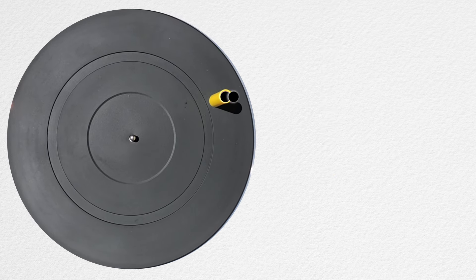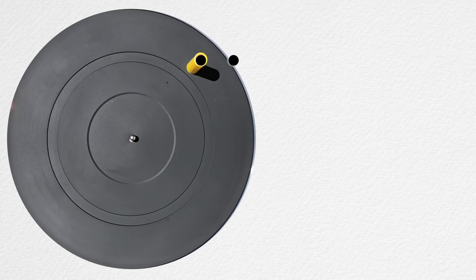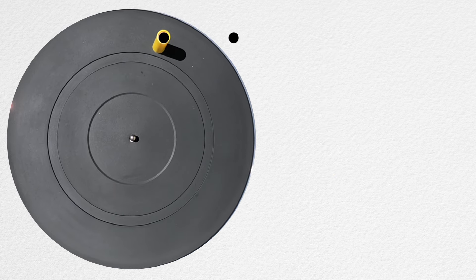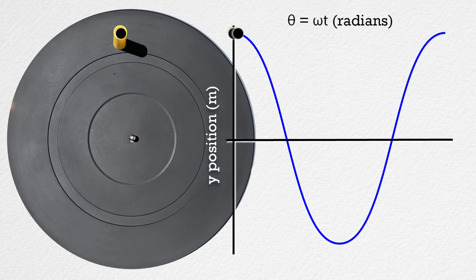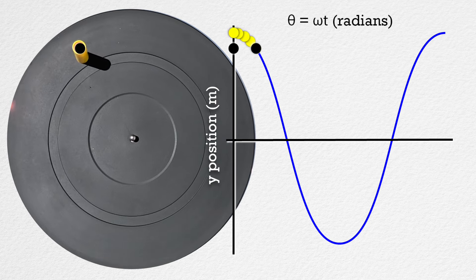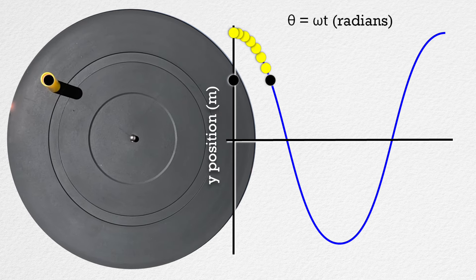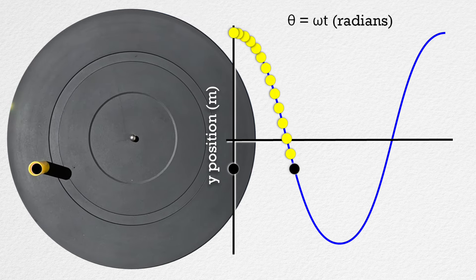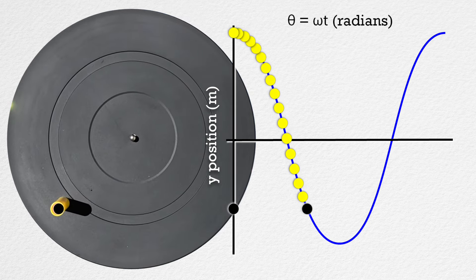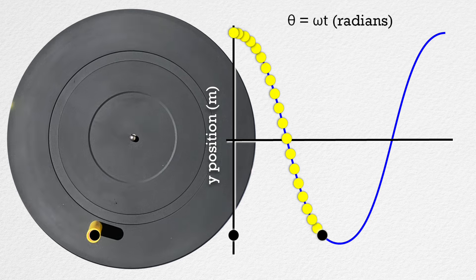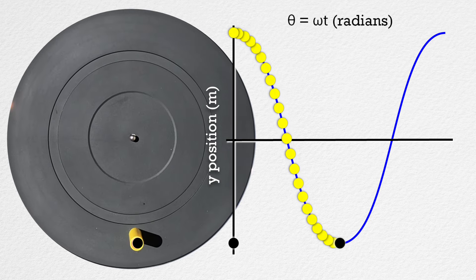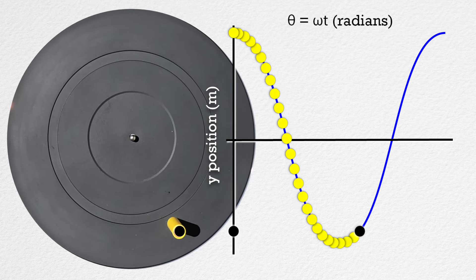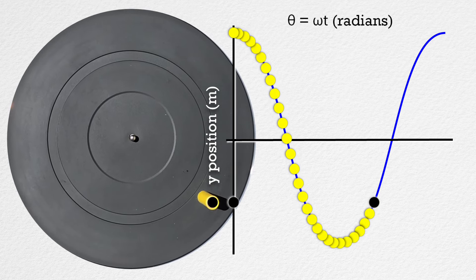Let's go back to just the dot because it has a more precisely identified location. Notice, if we look at where the dot is located as a function of time, the dot specifically follows the equation we derived.